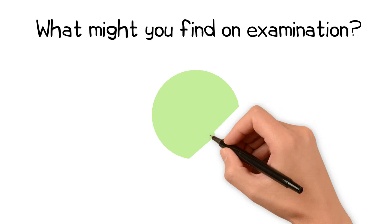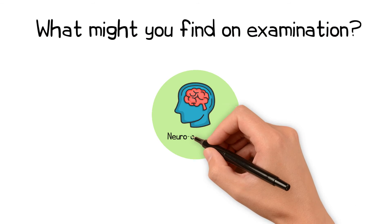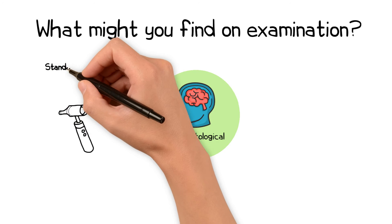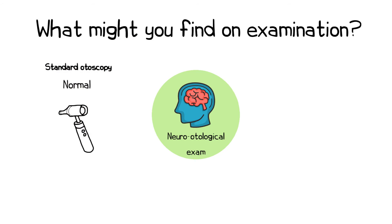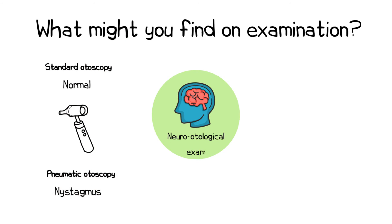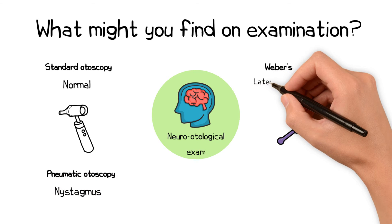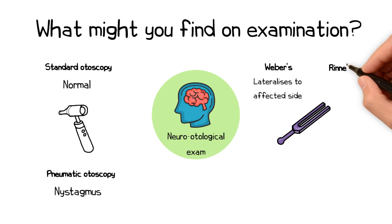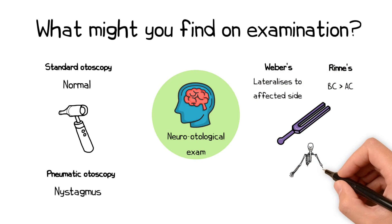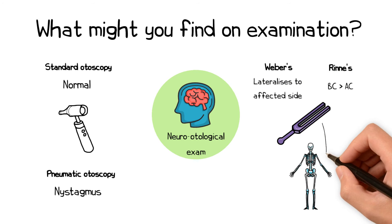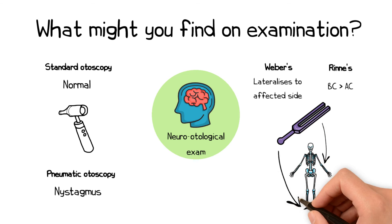A full neuro-otological examination should be performed. Otoscopy would be normal, but pneumatic otoscopy may cause nystagmus with a fast phase to the side of the dehiscence. Weber's with a 256 or 512 Hz fork may lateralise to the side of the dehiscence, with bone conduction greater than air conduction on Rinne's test. A tuning fork applied to the elbow or ankle can often be heard on the side of the dehiscence.